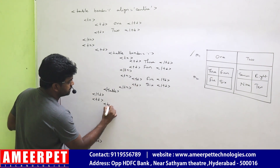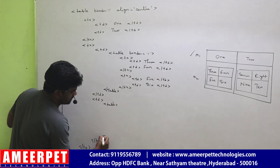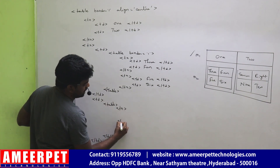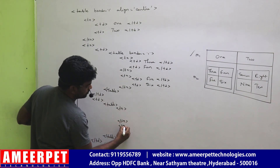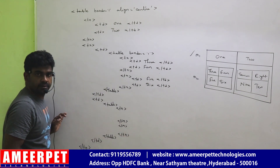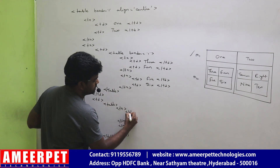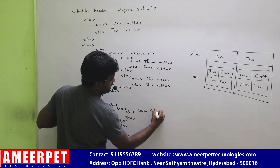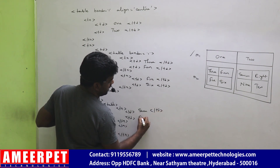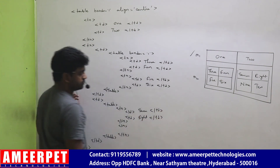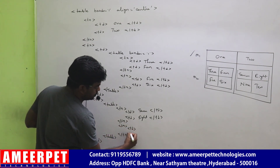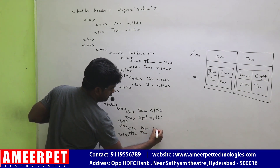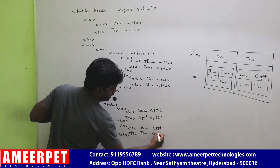The same thing you do for the second column also. Create the table: table start, table end. In that, two rows are there — TR start, TR end, TR start, TR end — which consists of two columns. The values are 7, TD end, 8, TD end. In the second row, the two TDs have values 9 and 10.